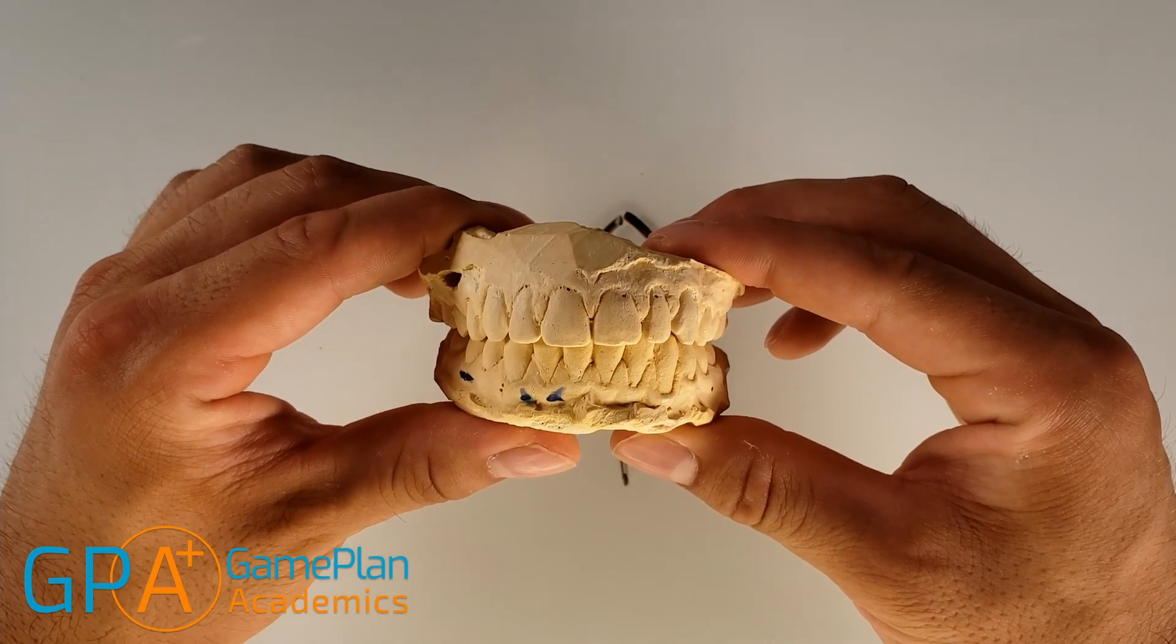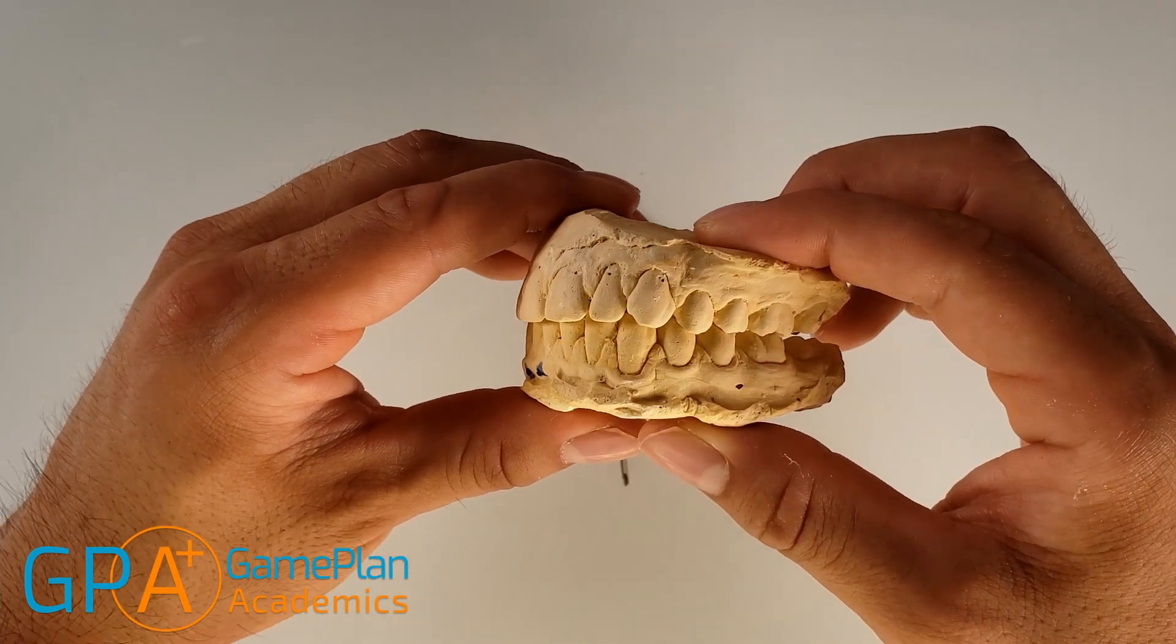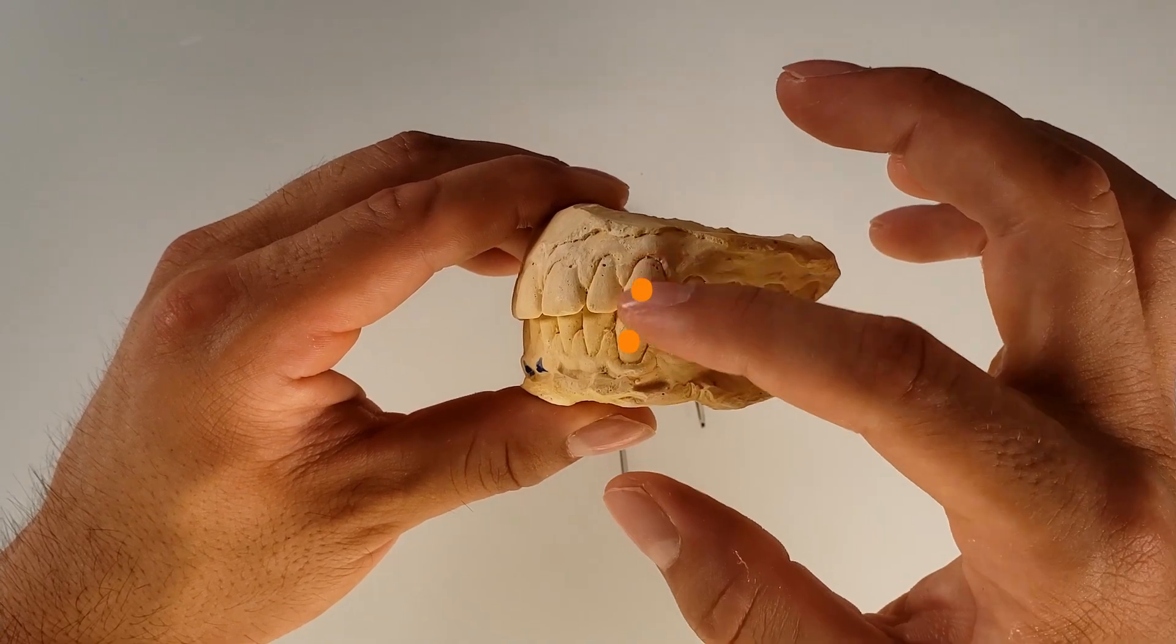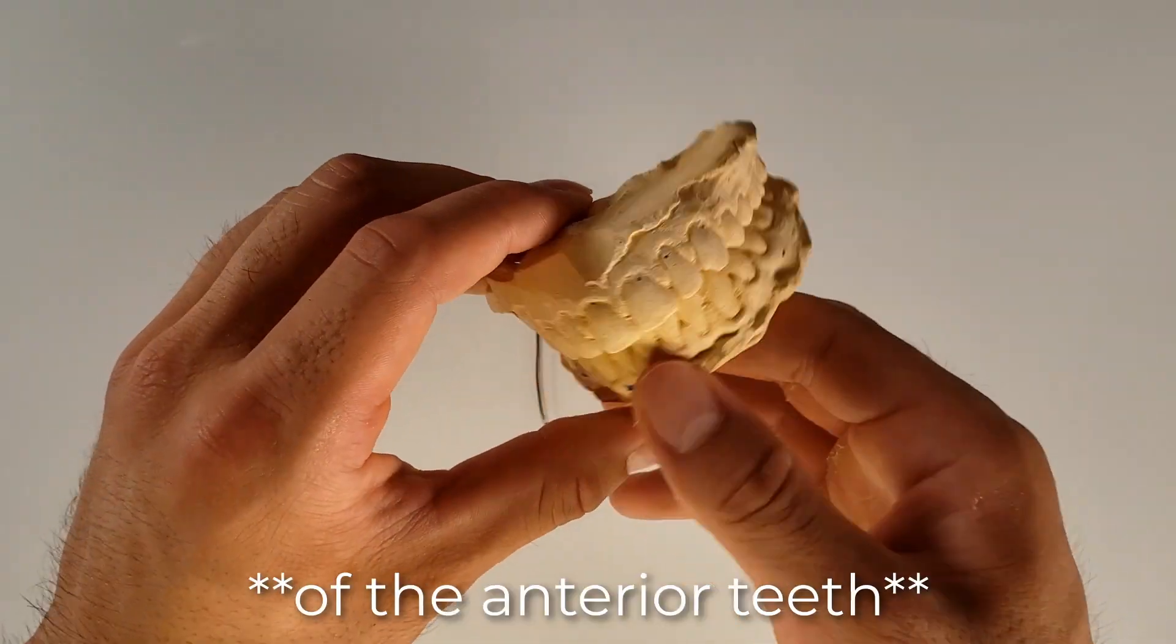Let's talk about the cusps and ridges of the anterior teeth. There's only one group of teeth that we need to worry about for the anterior teeth: the canines, the cuspids, because they're the only ones with a cusp.